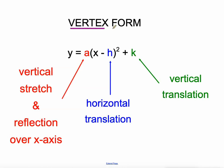Why is it called vertex form? Because the vertex of this parabola — the place where it stops getting bigger and starts getting smaller — is easily located in this equation. It's at (H, K). That's the vertex of that equation, and that's why this is called vertex form.